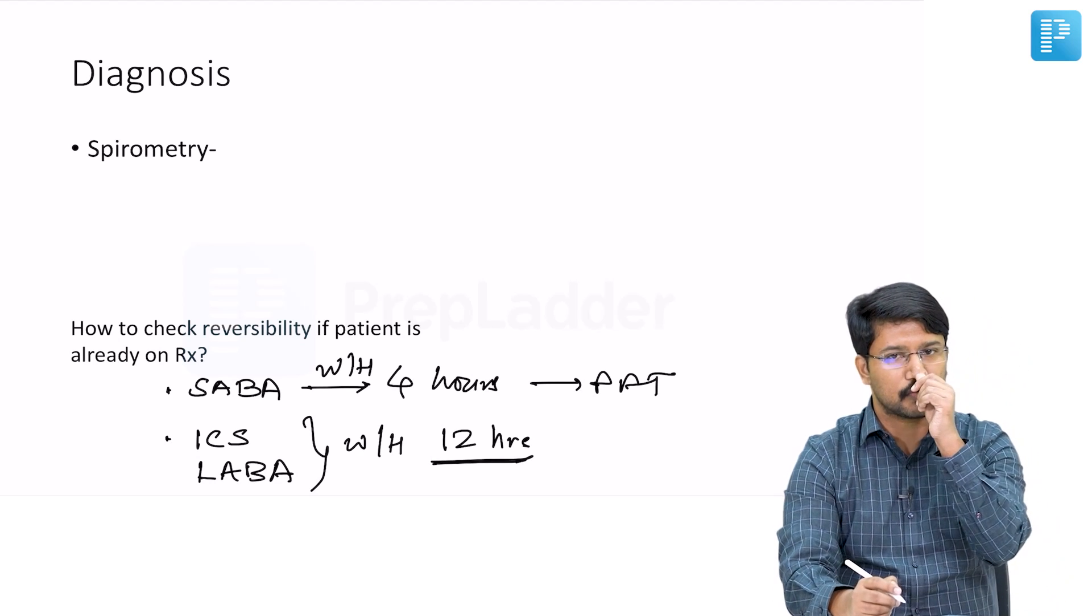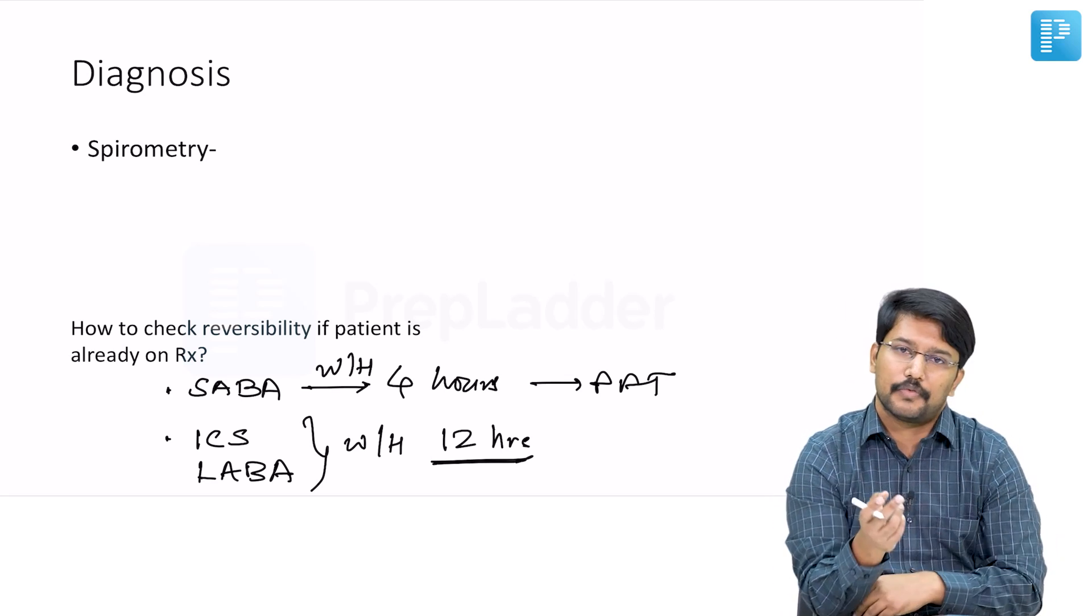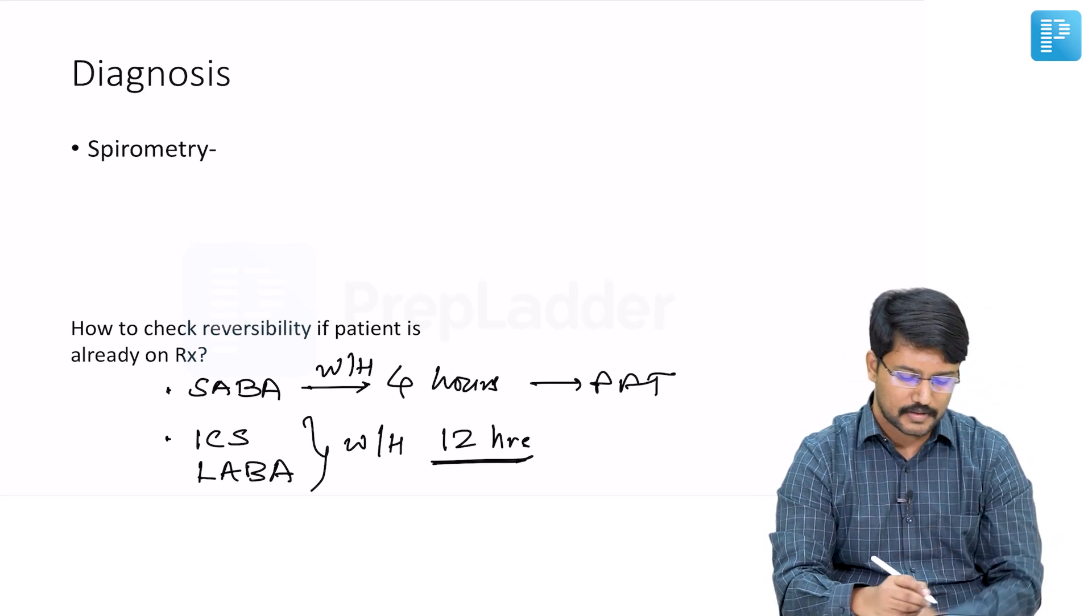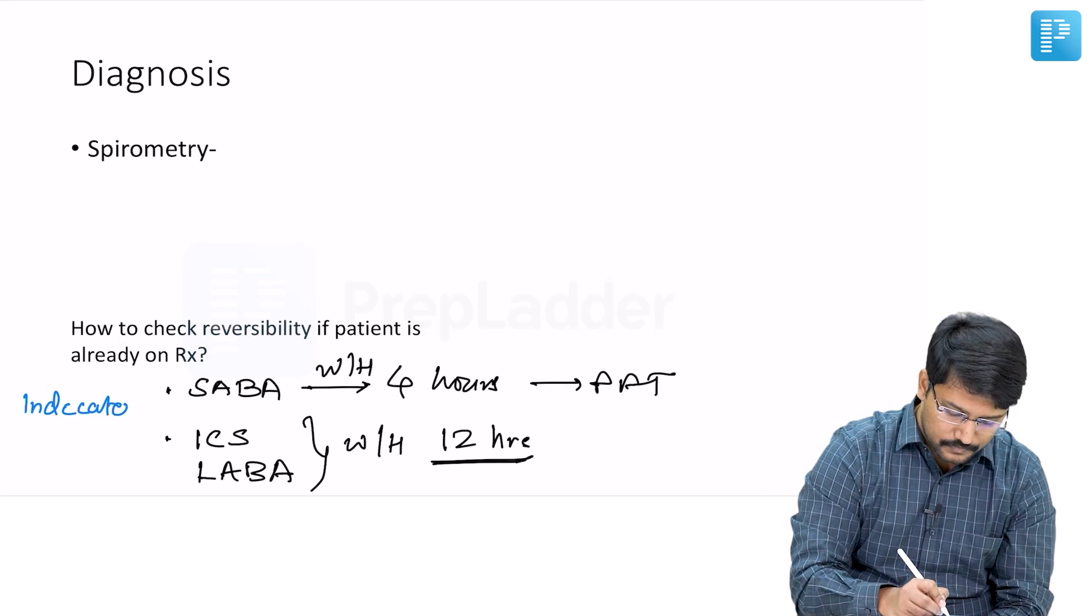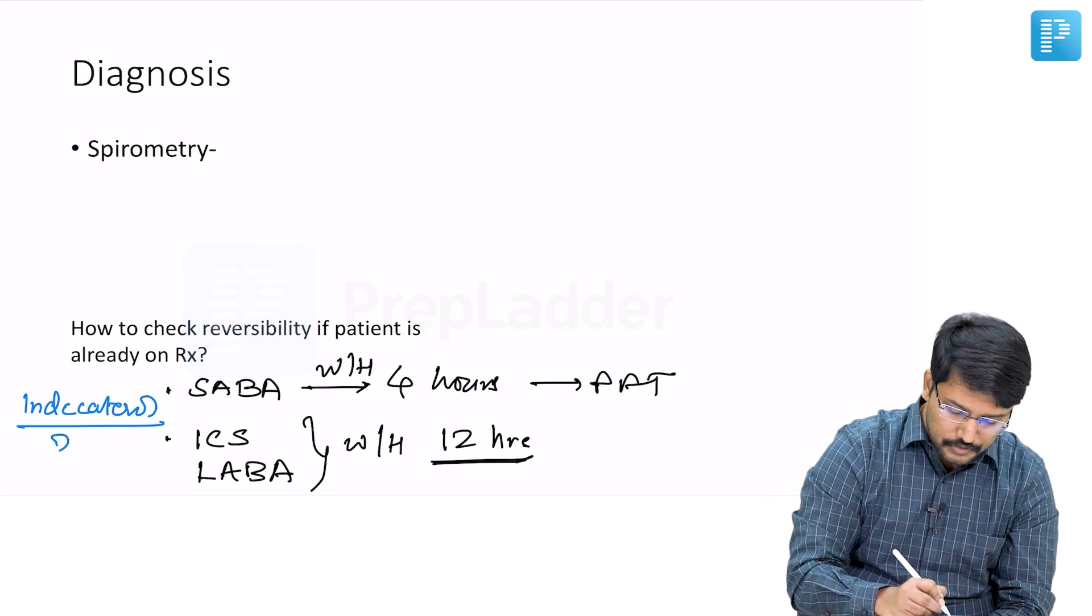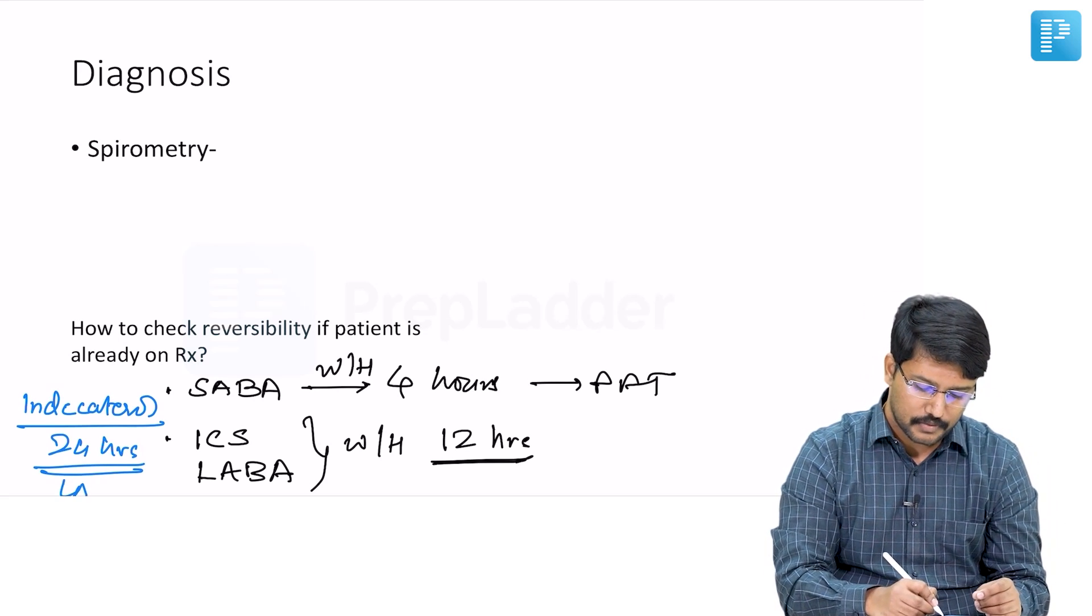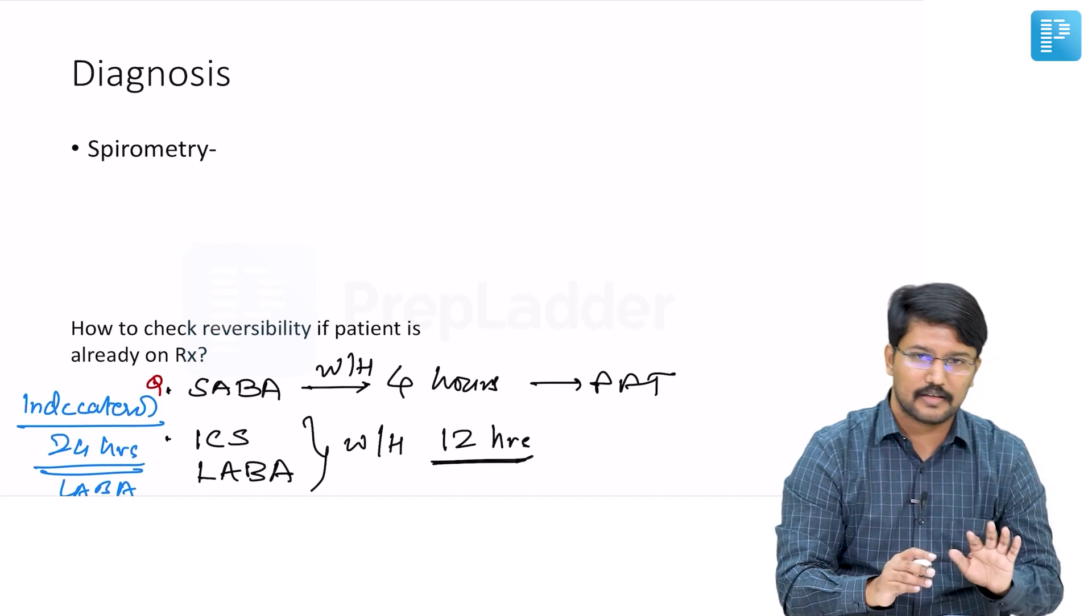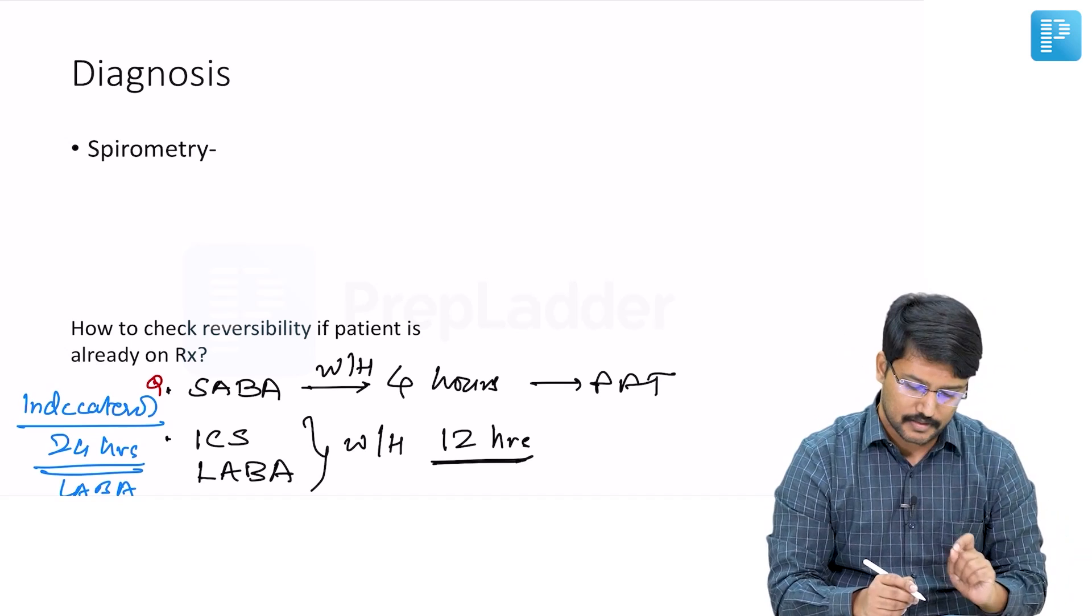Remember most of the ICS and LABA work for less than 12 hours, but there is a drug which can work for more than 12 hours, and that is indacaterol. This duration of action is 24 hours. As of now, this is the longest acting LABA that we know and it is an MCQ point.